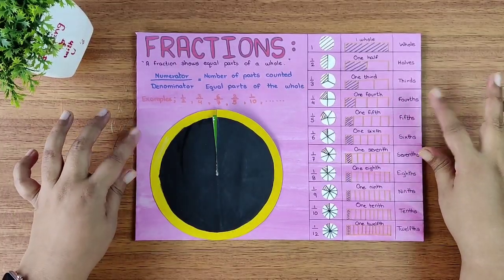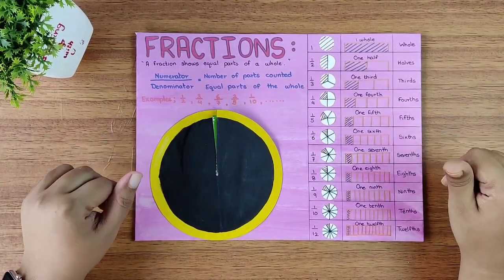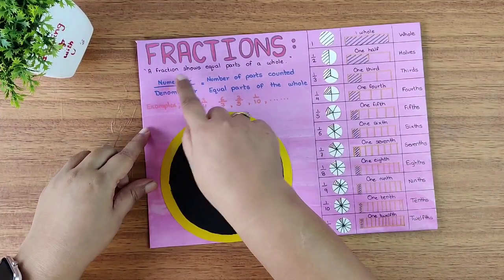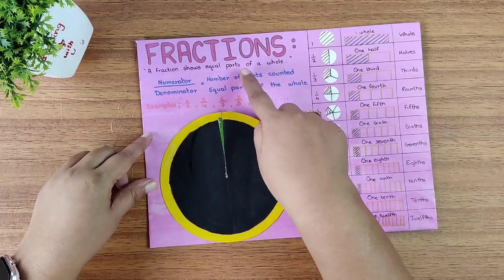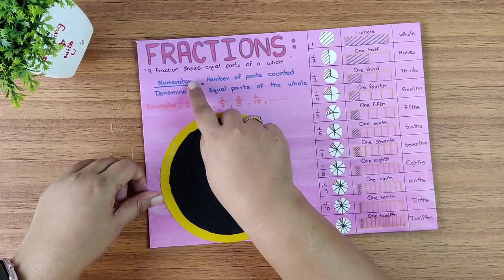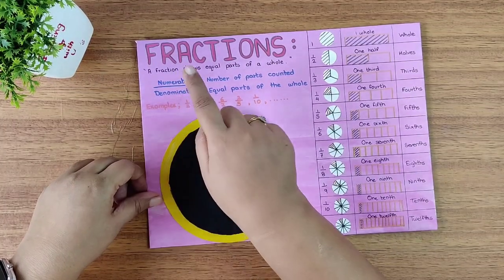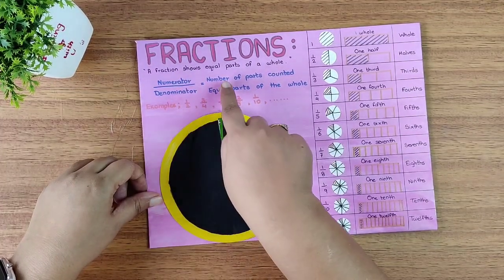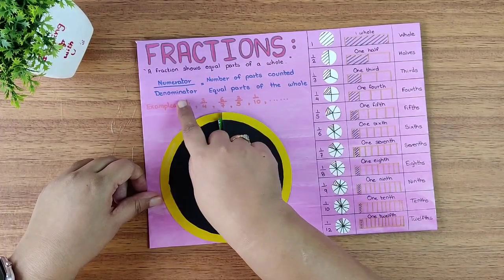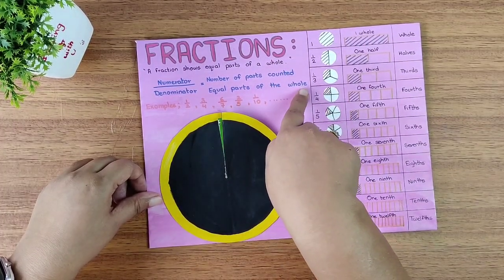So here it is, our project is ready on fractions. So now let's have a look. So what is a fraction? A fraction shows equal parts of a whole. It is written as numerator upon denominator. A numerator tells us the number of parts counted and the denominator tells us the equal parts of the whole.